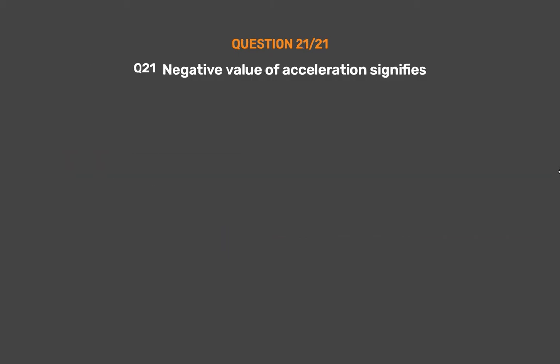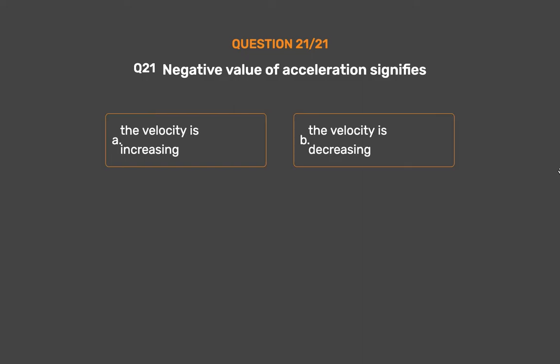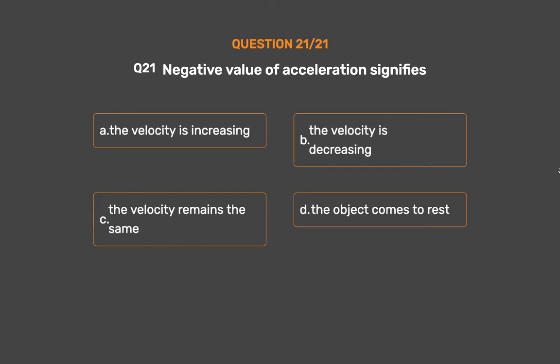Question No. 21. Negative value of acceleration signifies: Option A: The velocity is increasing. Option B: The velocity is decreasing. Option C: The velocity remains the same. Option D: The object comes to rest.